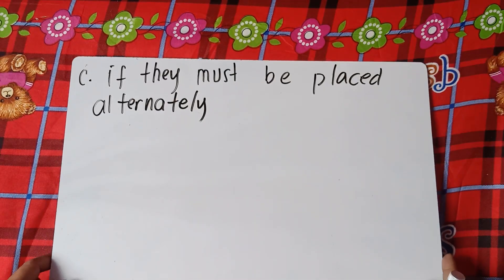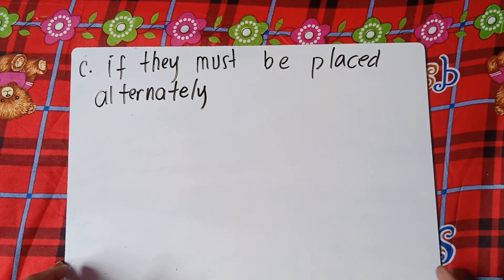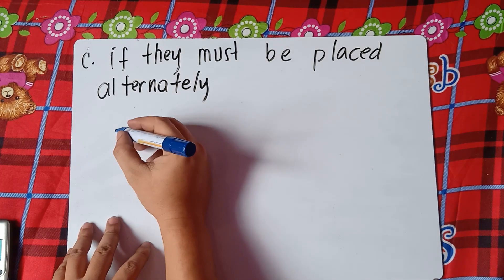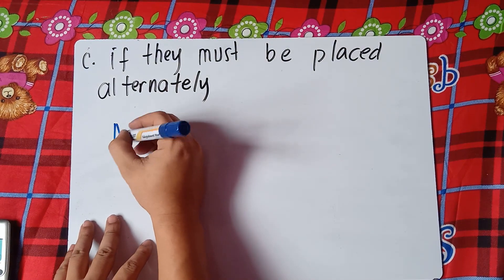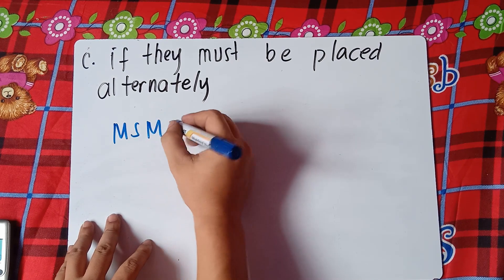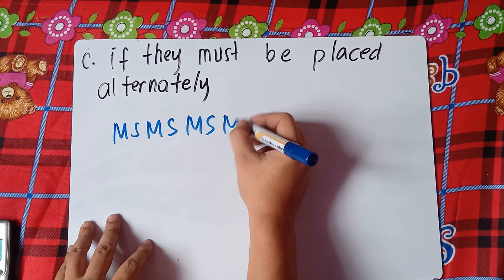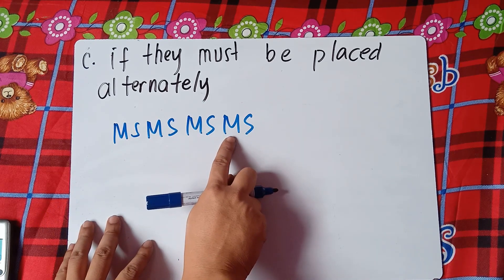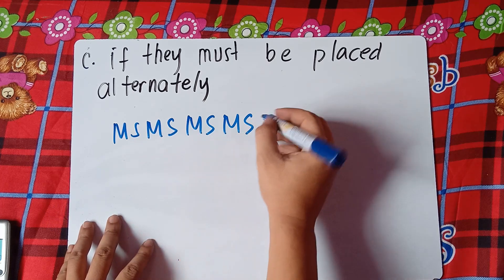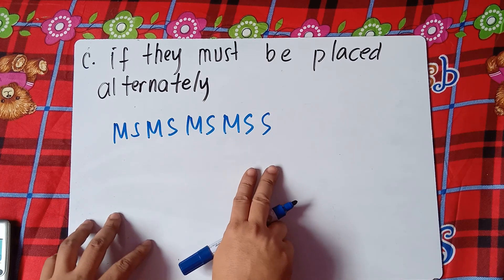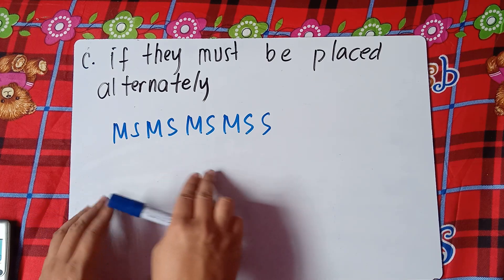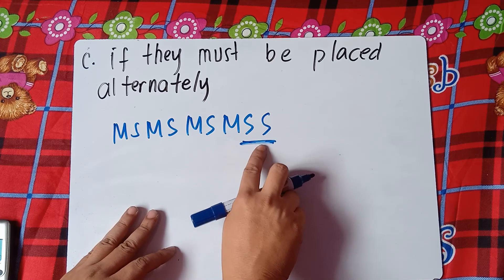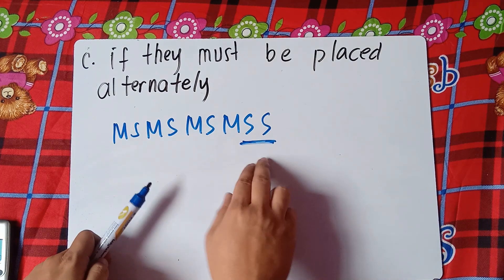For Letter C, if they must be placed alternately. If math comes first before science, we have: math, science, math, science, math, science, math, science — four math and five science. However, we cannot have two science books placed next to each other, so that arrangement doesn't work. We cannot place the books that way because it should be alternately.